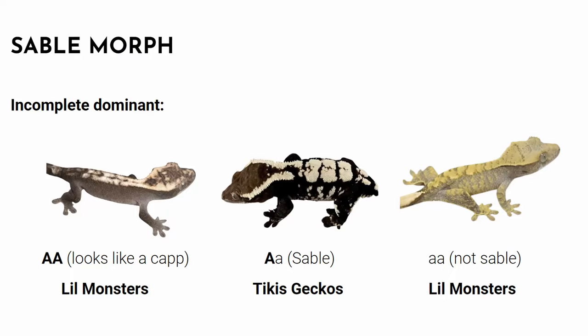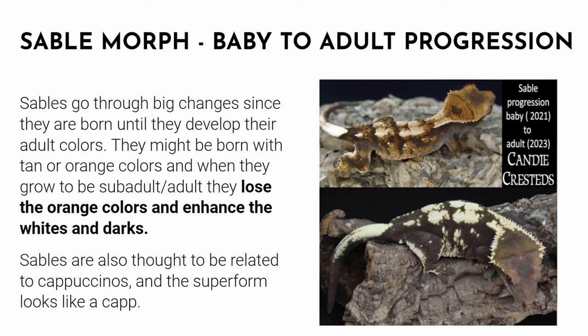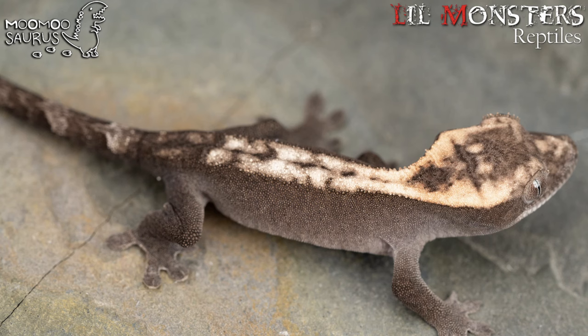The sable is a relatively new and interesting gene that is incomplete dominant. Big A/big A is one thing, big A/small A is another thing, and small A/small A is not a sable. It creates a pretty thick white color on the crests. Sables also change drastically from birth to sub-adult or adult stage — the orange colors are lost and white and dark colors are enhanced. The super form looks similar to cappuccinos, and this gene is thought to be related to the cappuccino gene.